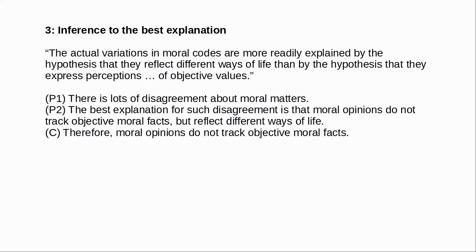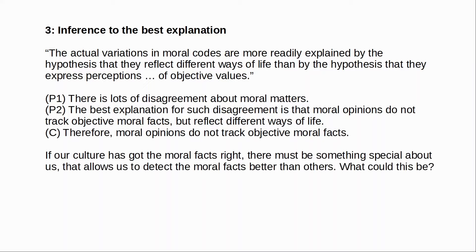If moral opinions do not track the objective facts, then we're not justified in thinking that any of our moral beliefs are true. One point here is that the moral realist has an explanatory burden. The moral realist has to explain why exactly other cultures get the facts wrong. If we claim that we have got the moral facts right, we must suppose that there is something special about us that has allowed us to perceive and reason about the moral values better than others. But what could this be? Why are the moral facts hidden from so many people? Why are so many cultures fundamentally wrong in the basic values that they hold? The anti-realist obviously has no such burden.